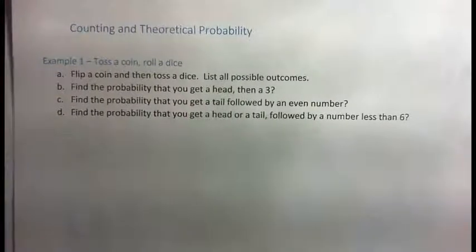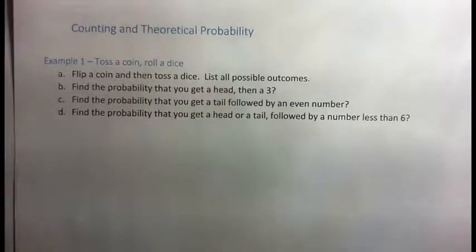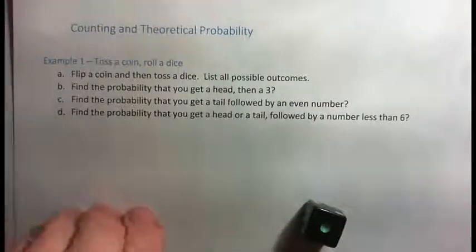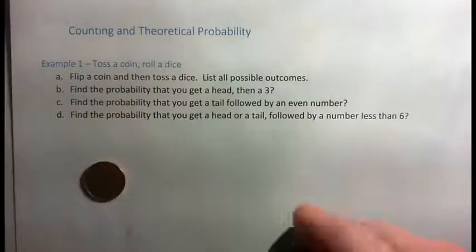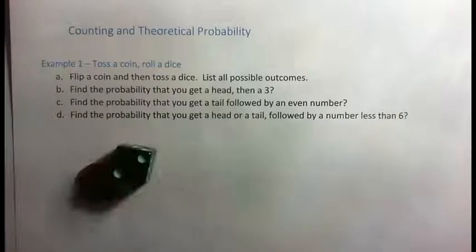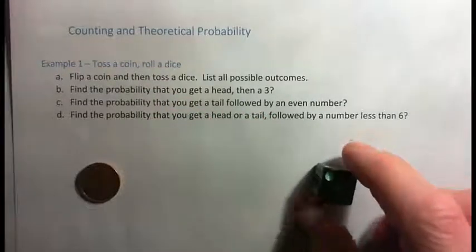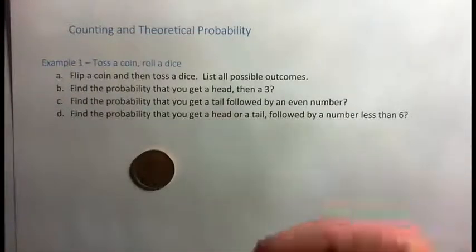Starting with example one: toss a coin, then roll a dice. List all possible outcomes, then find the probability you get a head and then a three. So here's a coin and here's a dice. There are two events taking place. We flip the coin and get heads or tails, and we toss the dice and get a number from one through six.